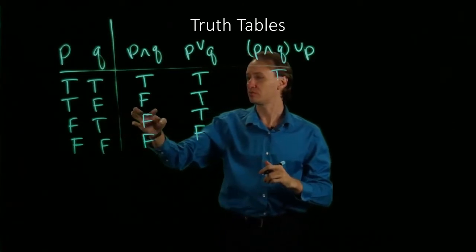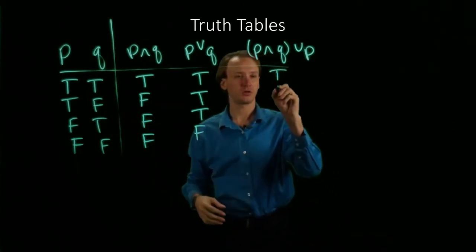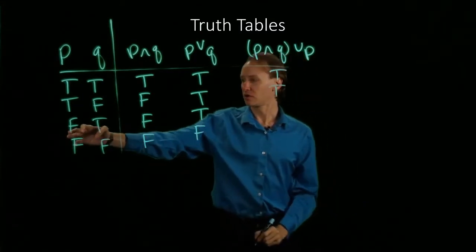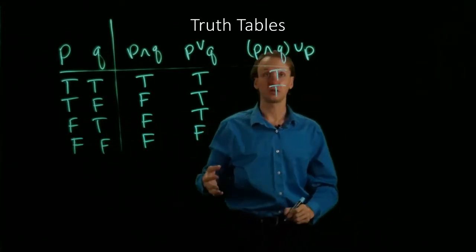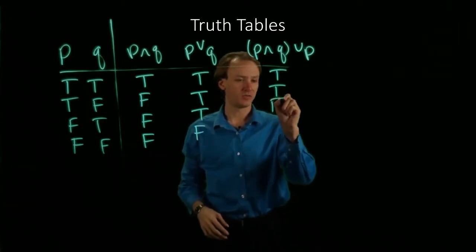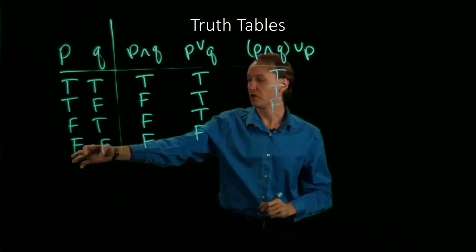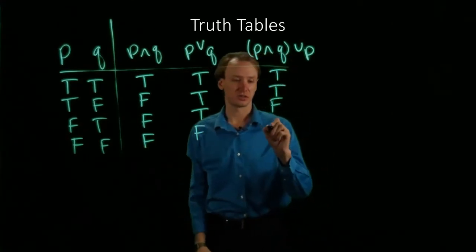Here, P is true but P AND Q is false, the OR will still be true. For here, I've got P is false and P AND Q is false, so that will be false, or false OR false is false.